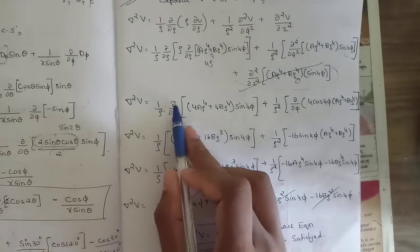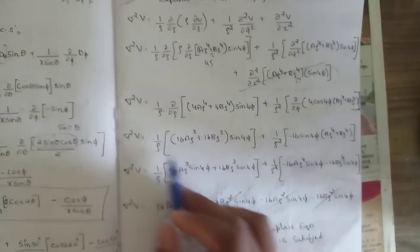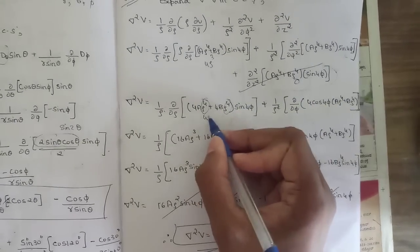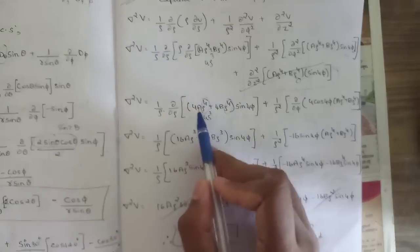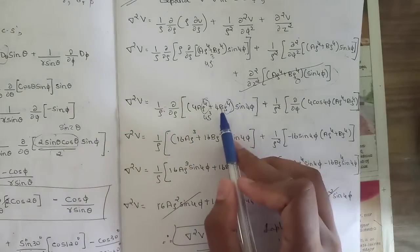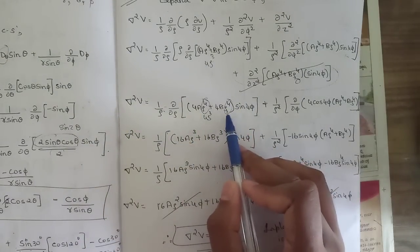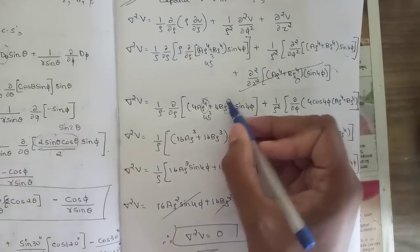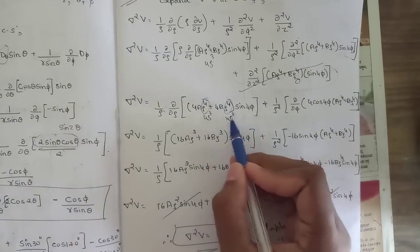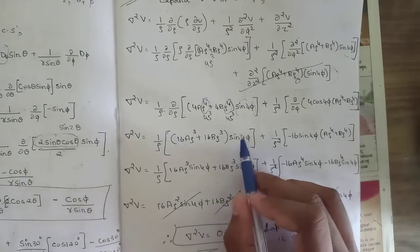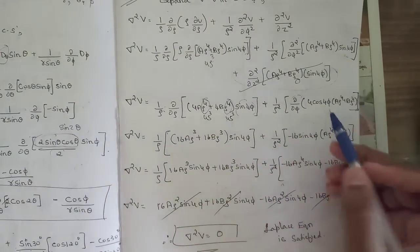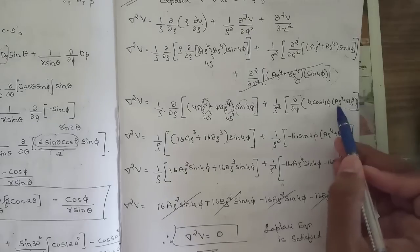Then differentiating the ρ-terms: ρ⁴ differentiates to 4ρ³, giving 16aρ³ and 16bρ³ sin4φ. For the second φ-differentiation, (aρ⁴ + bρ⁴) is constant and we differentiate 4cos4φ.